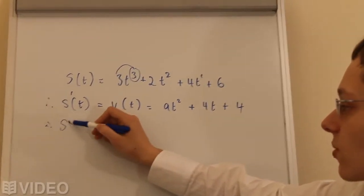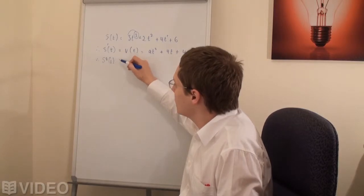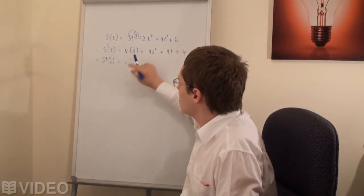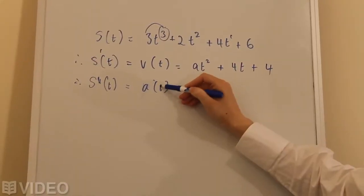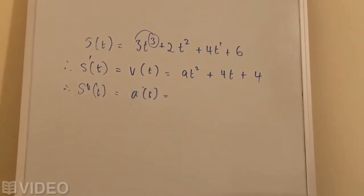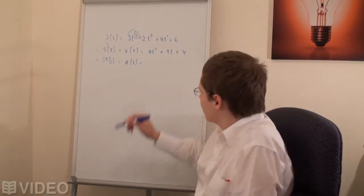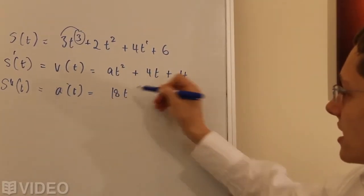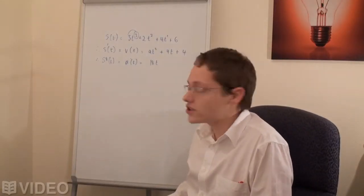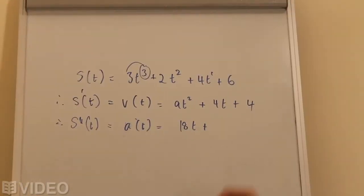And then we differentiate our last equation to get the second derivative, which is equal to the acceleration-time function. So 9 times 2 is 18, giving 18t. Then we simply differentiate our next term and we get 4.